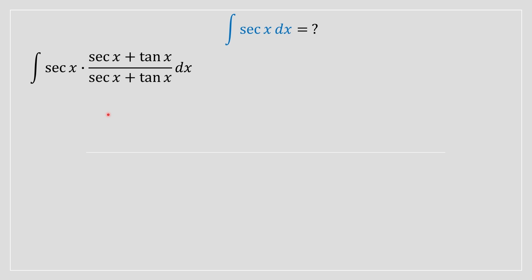You might be wondering why this is rewritten in this format. The reason is we need to choose a u variable that renders this solvable, and we must introduce something to sec x dx to render that solvable.